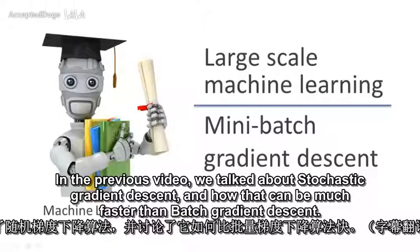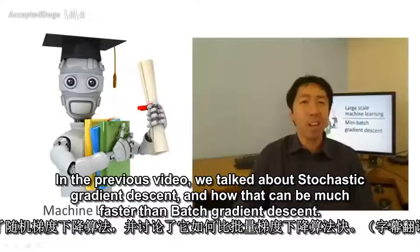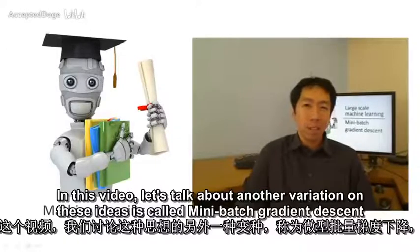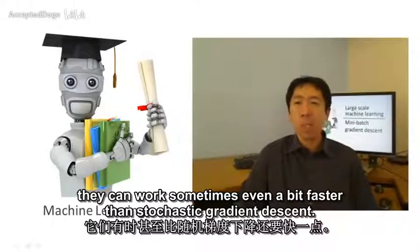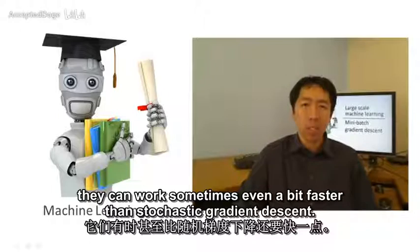In the previous video, we talked about stochastic gradient descent and how that can be much faster than batch gradient descent. In this video, let's talk about another variation on these ideas called mini-batch gradient descent, that can work sometimes even a bit faster than stochastic gradient descent.